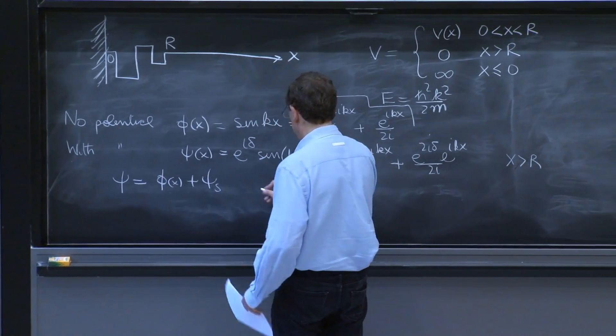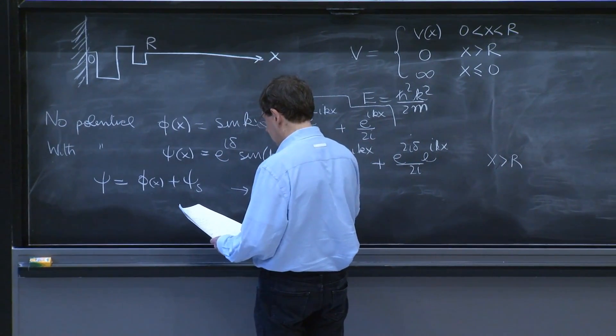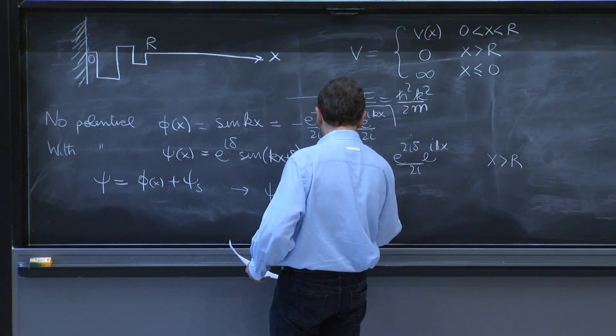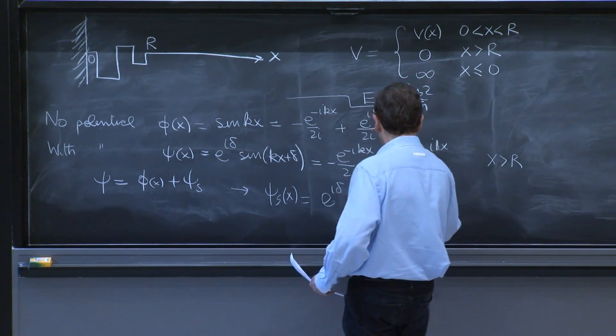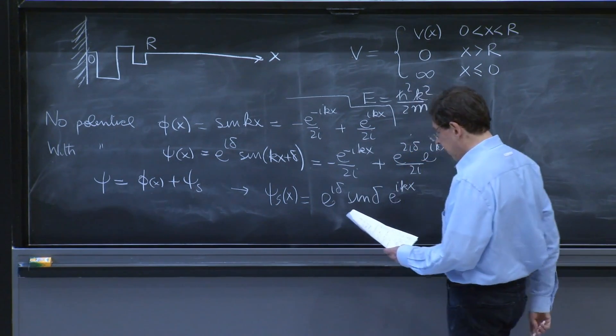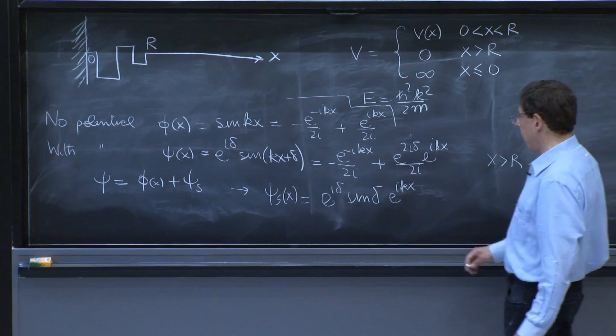Quick calculation with these things gives you that the scattered wave is e to the i delta sine delta e to the i kx. It's an outgoing wave.